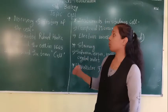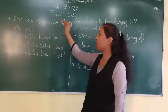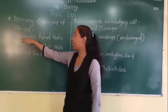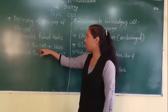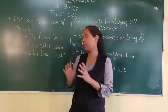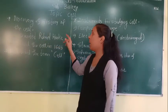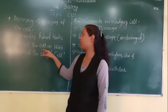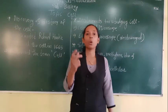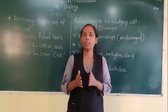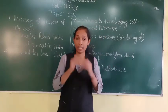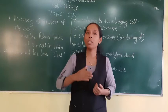First we will go to the first point, which is the discovery and history of the cell. The English scientist Robert Hooke discovered the cell in 1665. Robert Hooke took a thin portion of cork — that is, the bark of a plant — and observed it under a microscope.